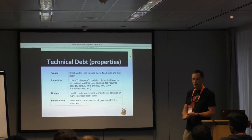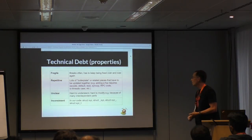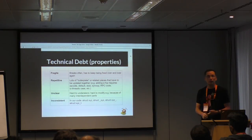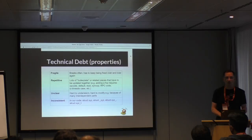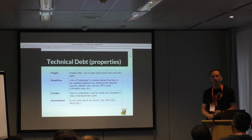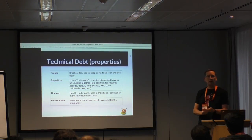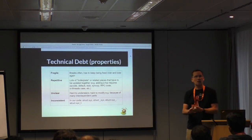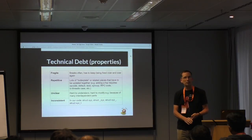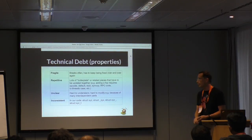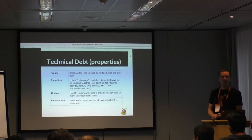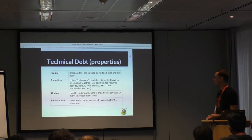What are the characteristics of debt-ridden code? One is, it's fragile. It breaks all the time. You have to keep fixing bugs. Does that sound familiar to anybody? Fixing a lot of bugs over and over again in the same code? It's particularly bad in some parts of the code, which I'll be illustrating.